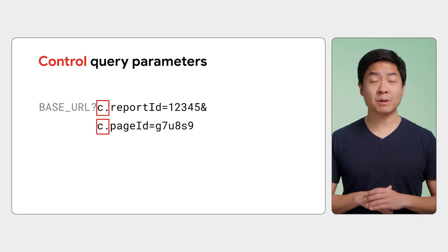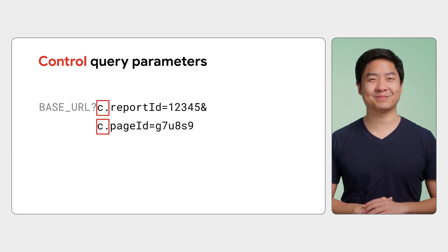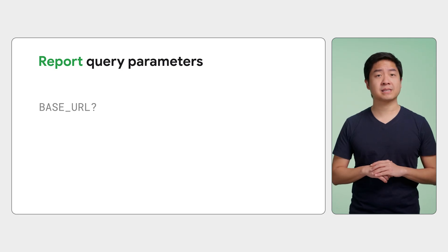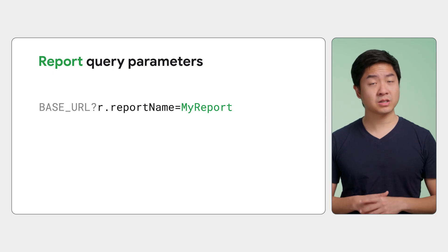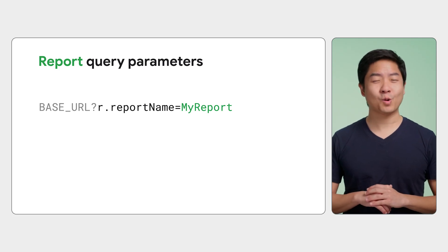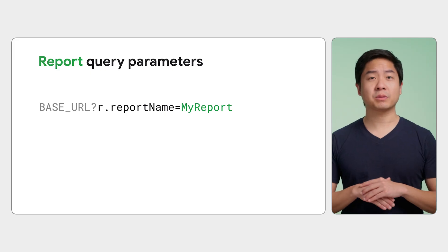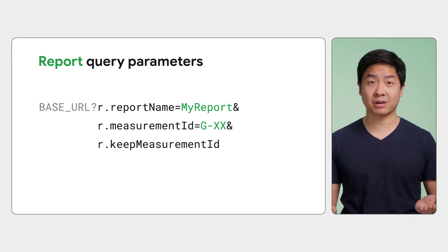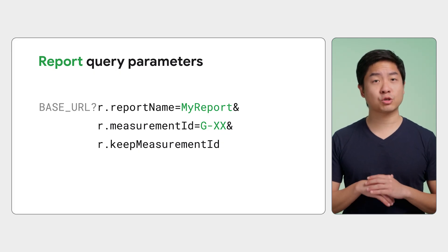The other types of query parameters also follow the same naming convention. Next, you have report query parameters that set properties on your generated report. The r.reportName parameter sets the name of your report. You also have r.measurementId and r.keyMeasurementId parameters, which enable you to use Google Analytics to measure and track your report usage.